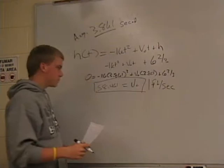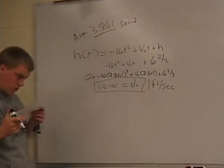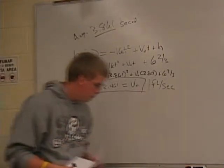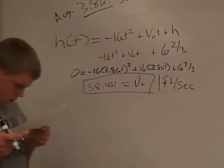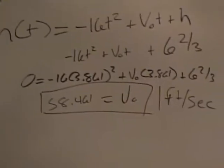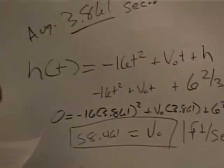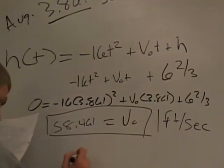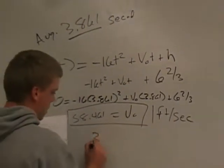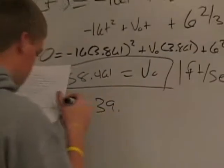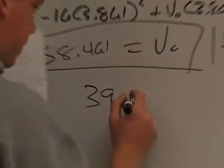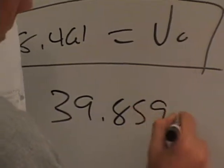We can then find that in miles per hour. You would just have to factor the label, but the initial velocity in miles per hour is going to be 39.859 miles per hour.